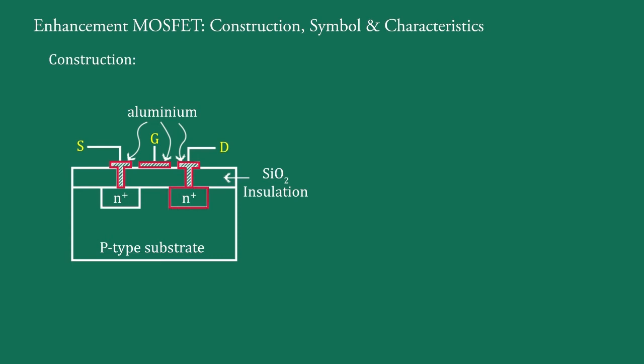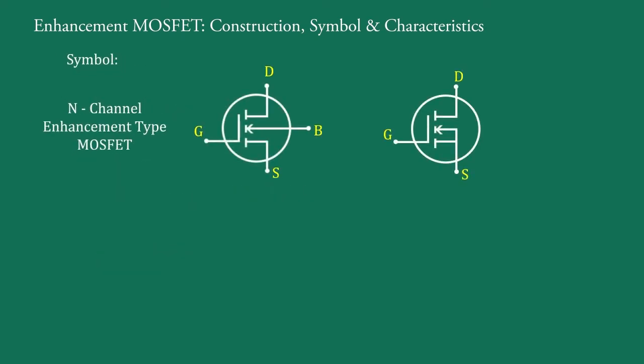Similarly, this N-plus region is joined with this aluminum layer, and a lead carried out from it is known as drain terminal. These are symbols of N-channel enhancement type MOSFET.